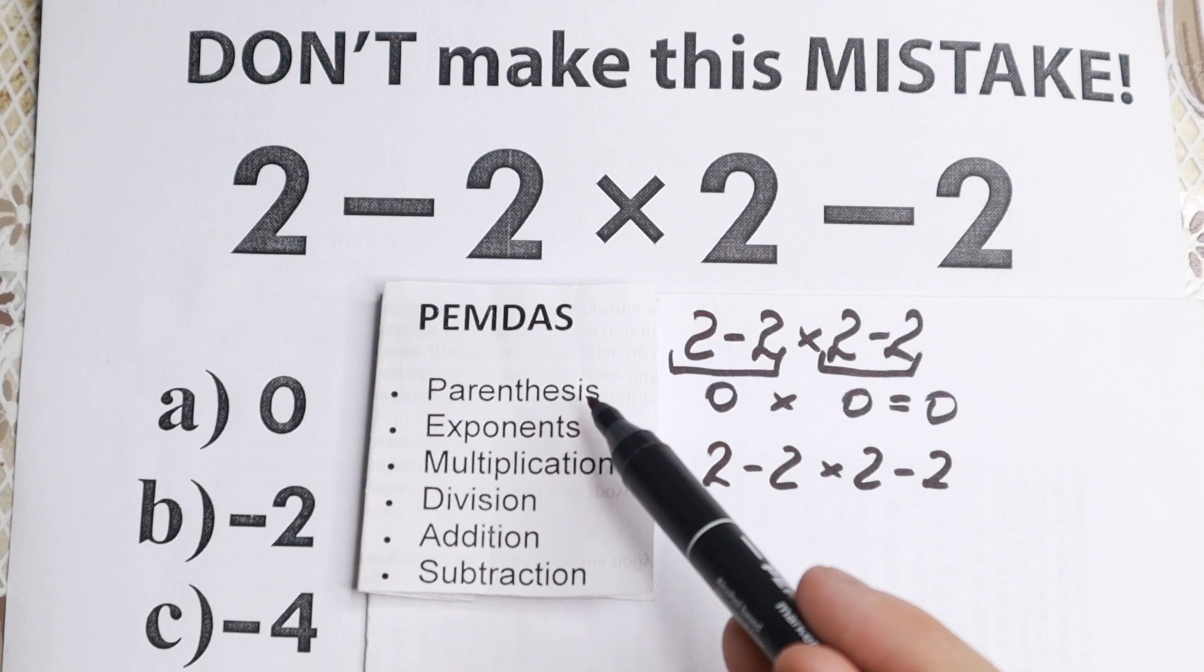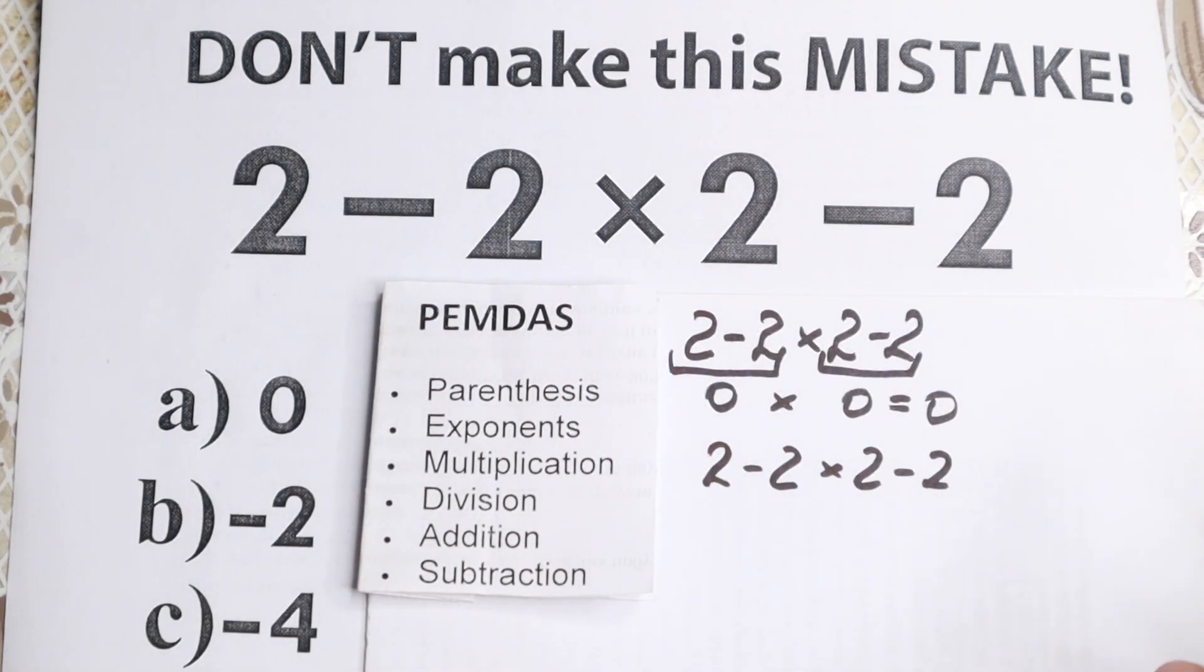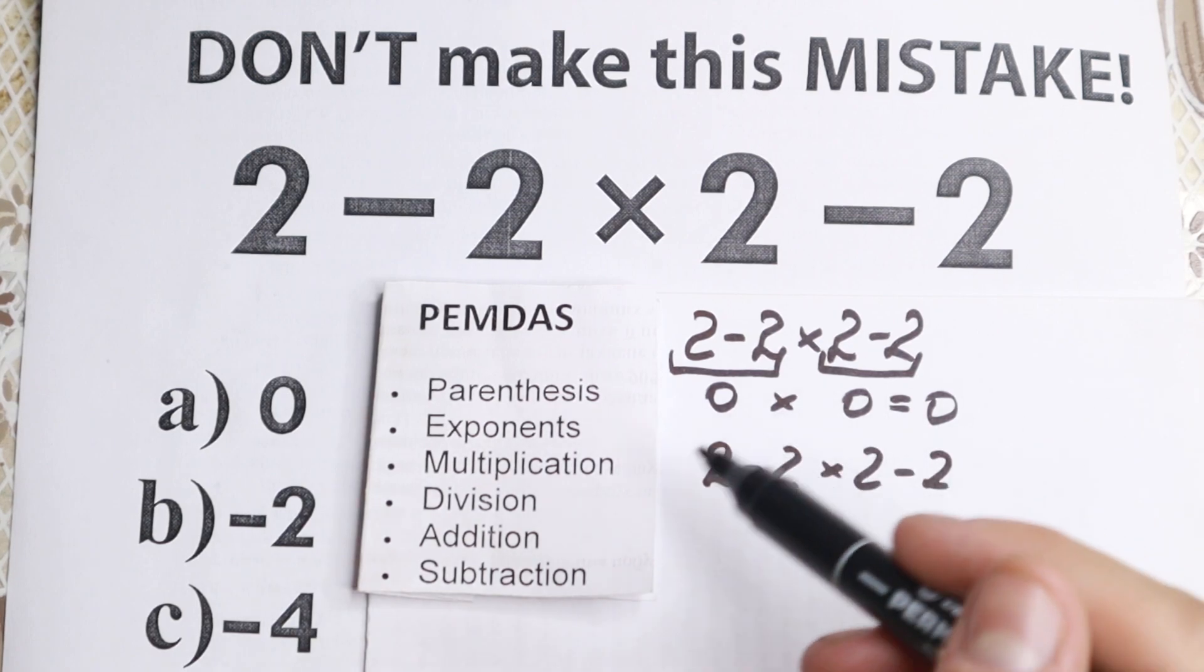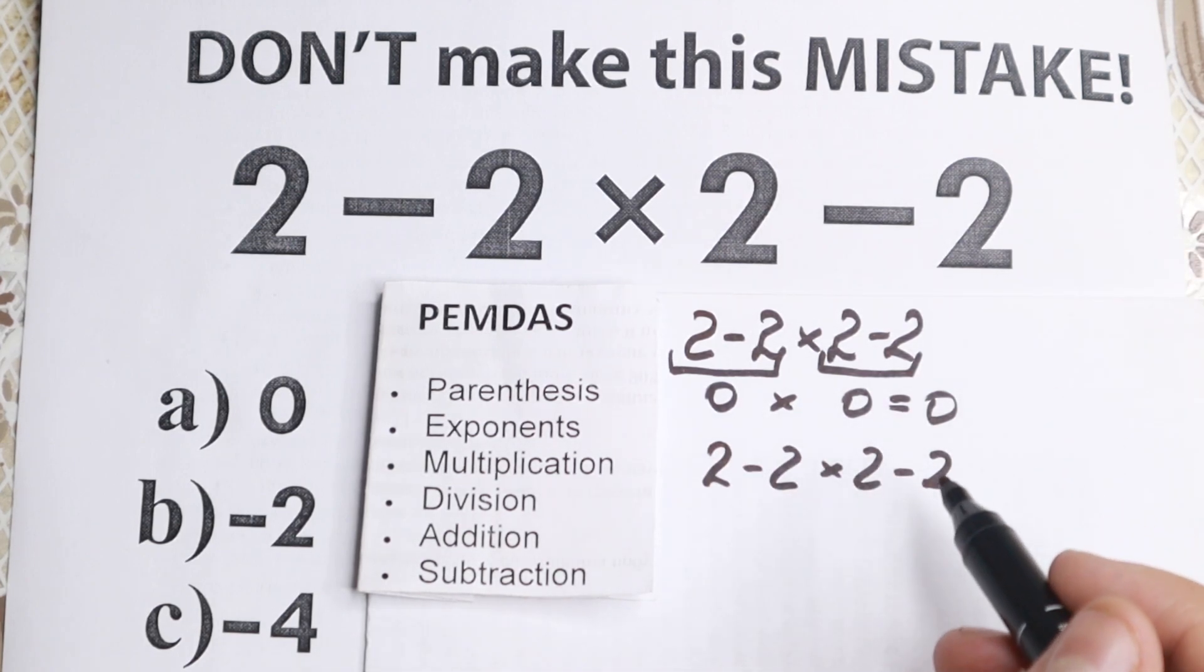The first step is parentheses. So what about parentheses? Are there any parentheses right here? No, I don't see any of those, so we just skip this part. And then we have exponent. I don't see any exponent, I don't see any squares, any cubes right here, so we don't have any of those, so we just skip these two parts.